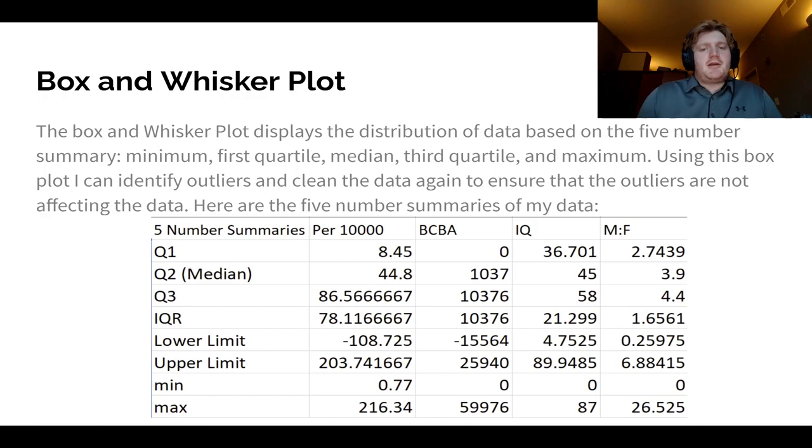And here is a five-number summary for the box and whisker plot. The box and whisker plot displays the distribution of data based on the five-number summary. And that includes the minimum, the first quartile, the median, the third quartile, and maximum. Using this box plot, I can identify outliers and clean the data again to ensure that the outliers are not affecting the data. And here are the five-number summaries of my data.